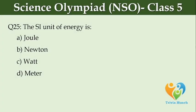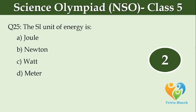The SI unit of energy is dash. Option A, joule. Option B, newton. Option C, watt. Option D, meter.